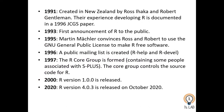Here is an overview of the R timeline. In 1991, R was created in New Zealand by Ross Ihaka and Robert Gentleman. Their experience in developing R was published in a 1996 JCGS paper. In 1993, the first public announcement of R was made. In 1995, they were convinced to use the GNU General Public License to make R free software. In 1996, a public mailing list was created: R-help and R-devel.